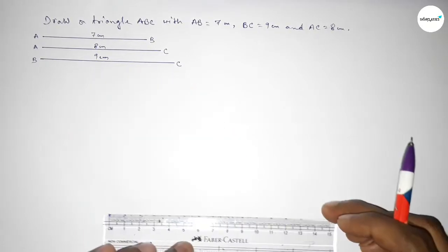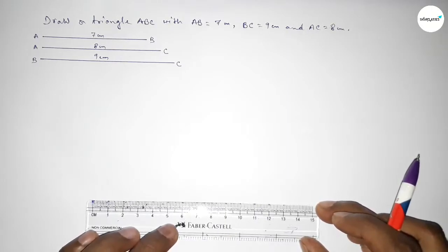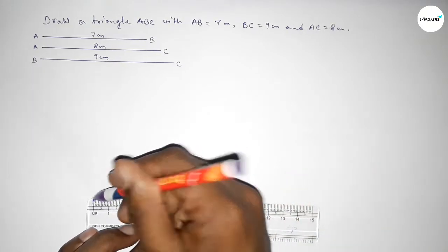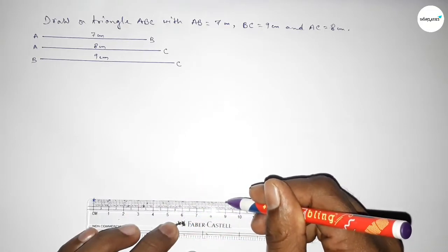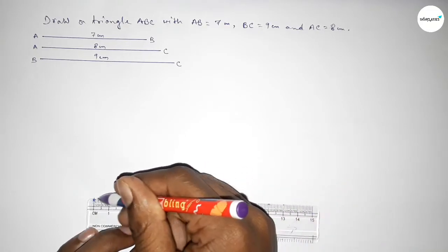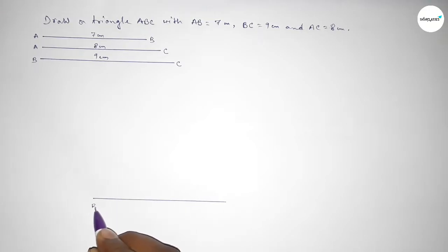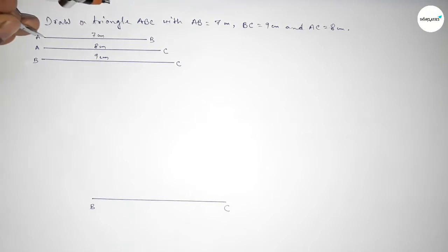First we have to draw a line of length 9 centimeter. So drawing here a line of length 9 centimeter — this is 9 centimeter — and taking here point B and here point C.